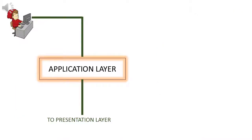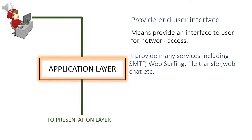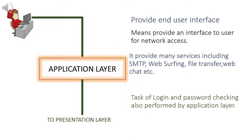What is application layer? What is the function of application layer? Application layer is the layer by which user interacts with network. It also provides many services including SMTP, web surfing, file transfer, web chat, etc. Generally, the task of login and password checking is done by application layer. Then it passes the data to presentation layer.